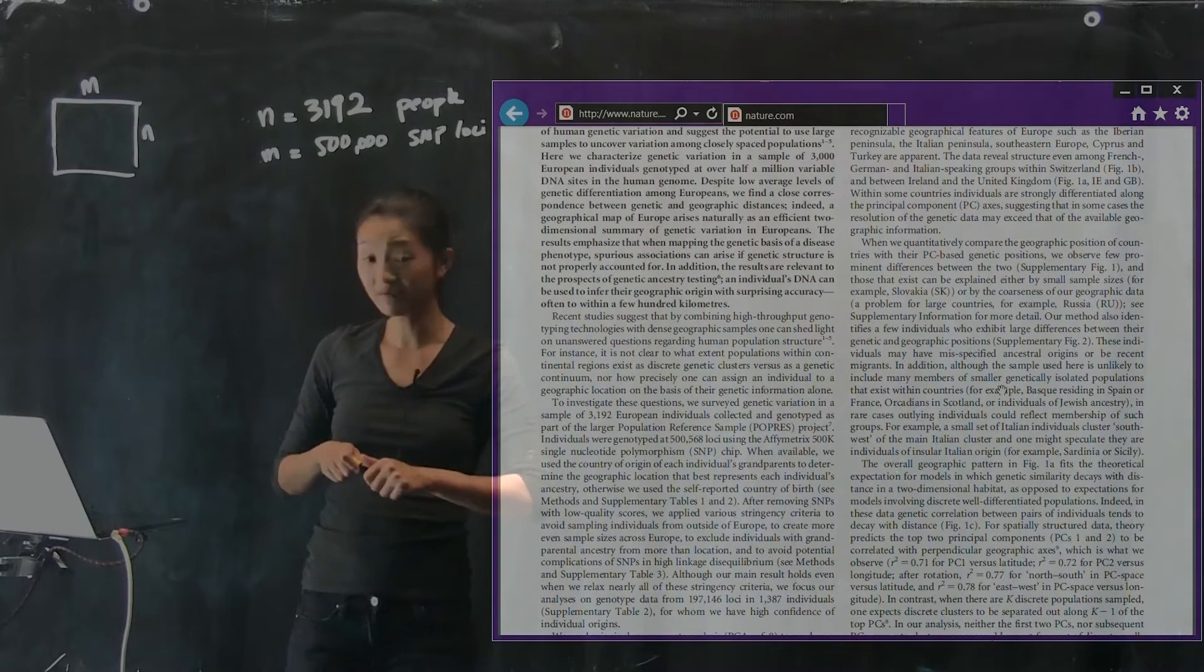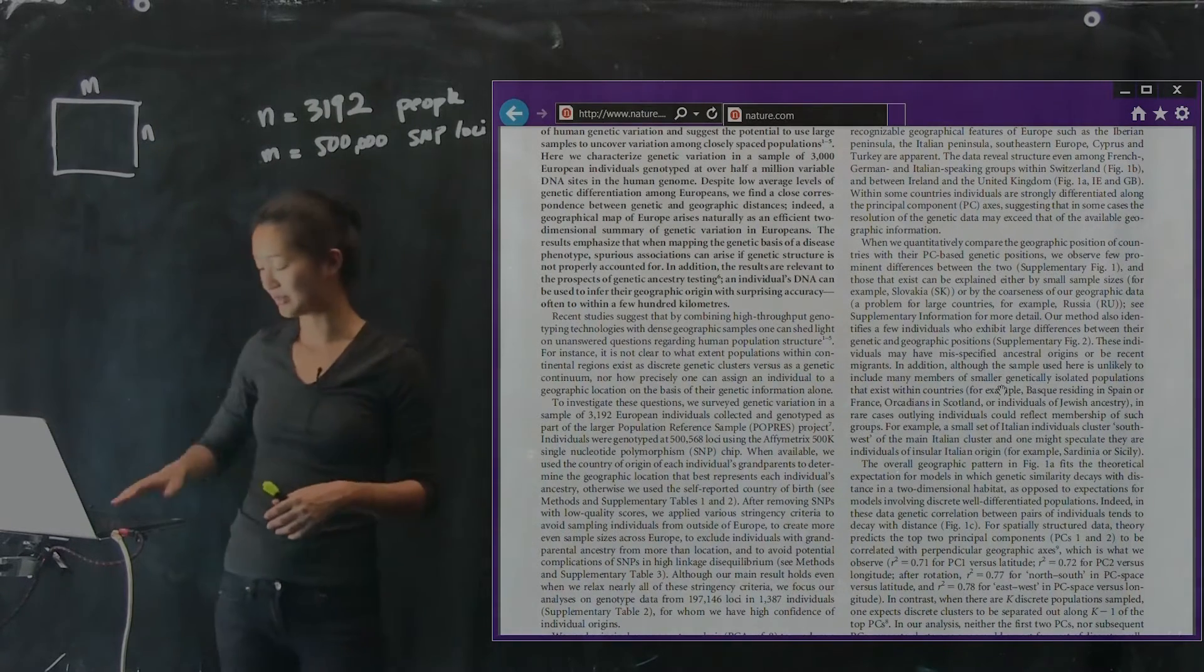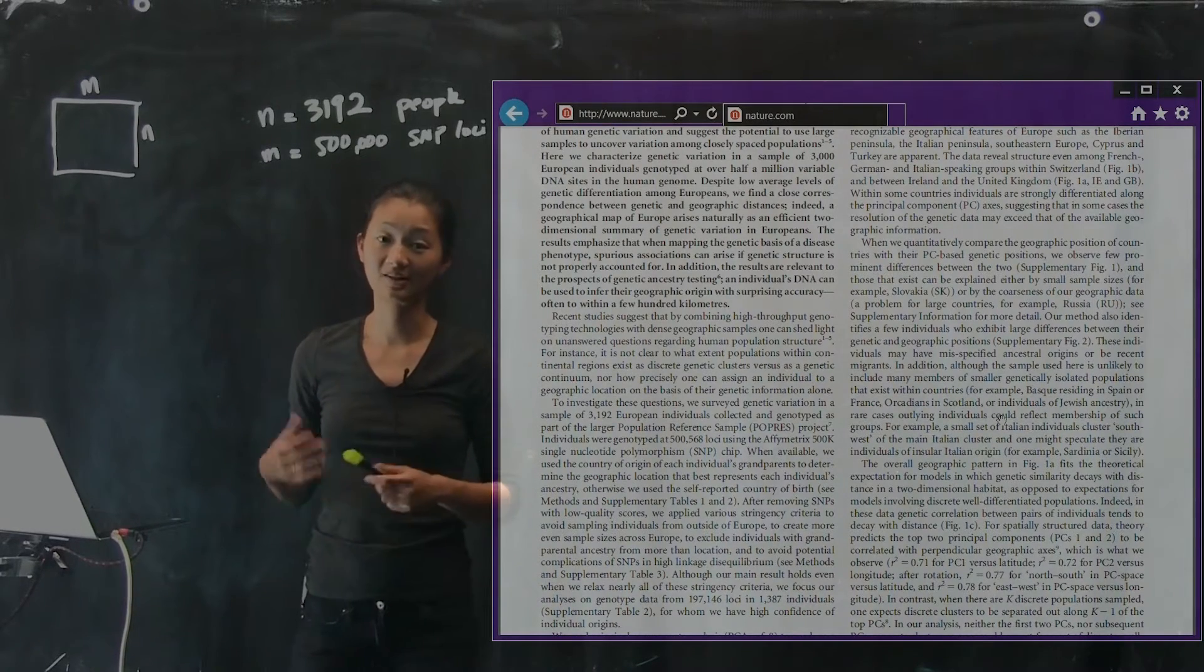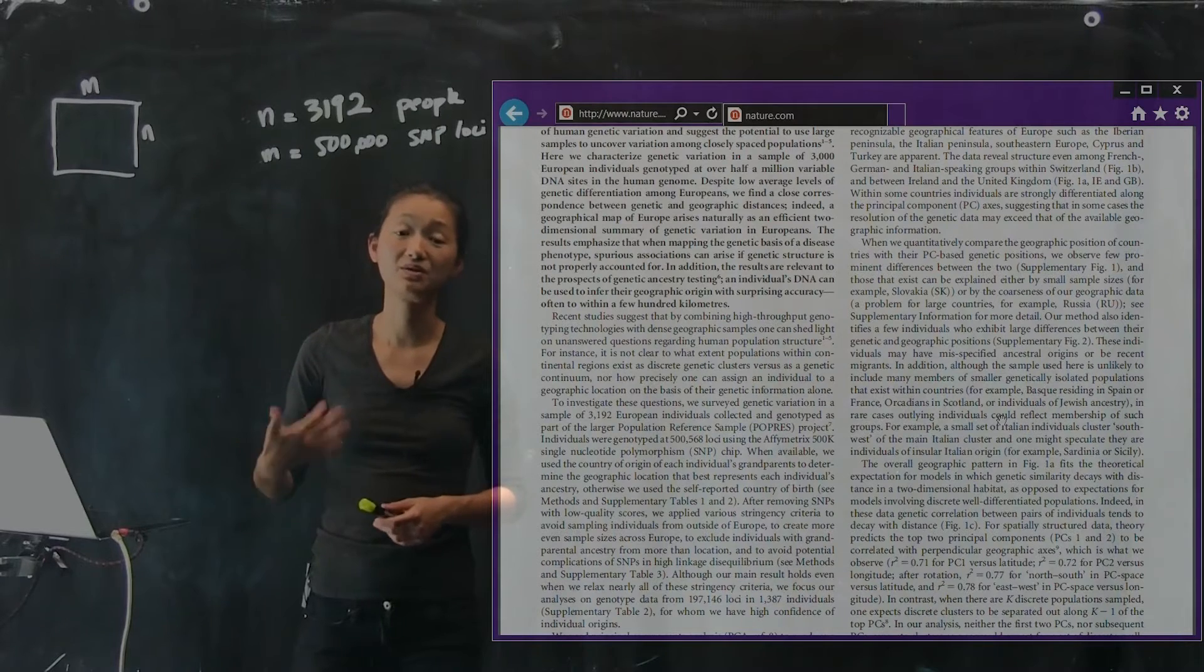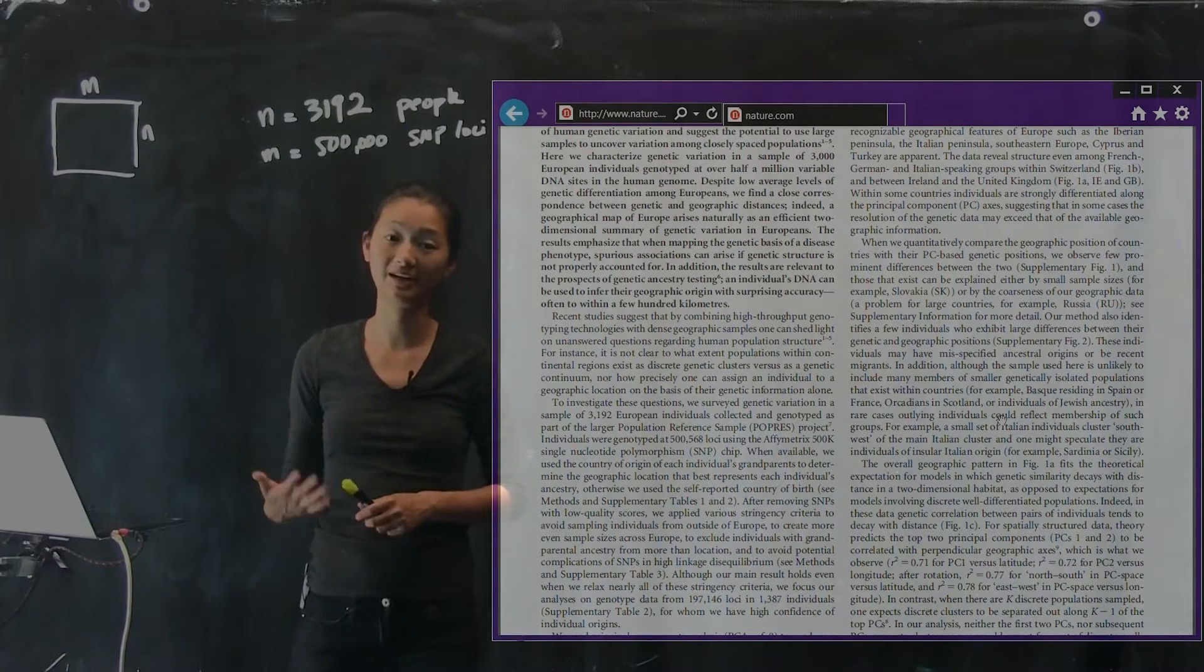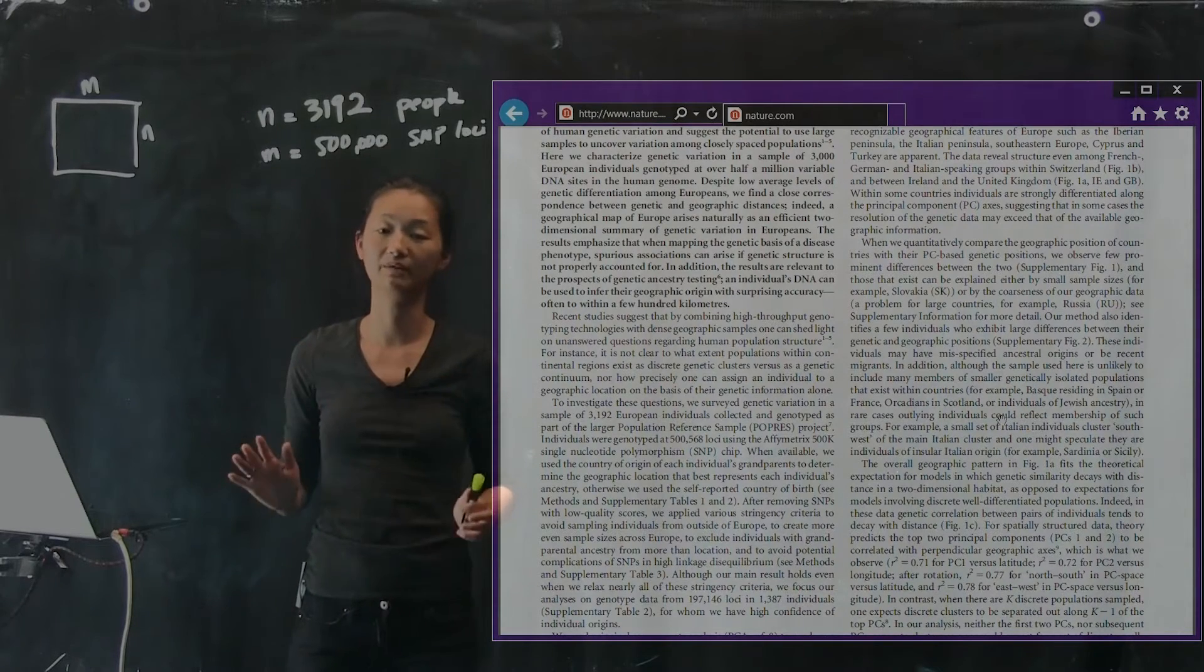Now, as a preview of what we're going to get to in the next couple of sections, what they ended up doing is an analysis called Principal Components Analysis. Now, Principal Component Analysis is something that once you hear about it once, you cannot stop hearing it. It is one of the most successful high-dimensional analytic techniques in all of science and engineering.